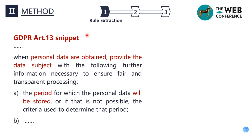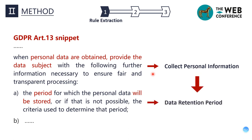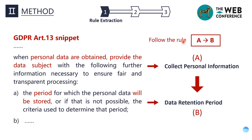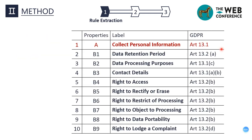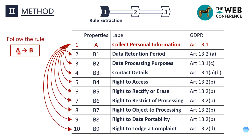The first step is rule extraction. Looking at a snippet of GDPR, we can see that it follows the rule: if personal information is collected, the data retention period should be given. We define A as collecting personal information and B as data retention period. Then it follows the rule A implies B. When determining compliance, a privacy policy is compliant if it follows the rule. The labels extracted from Article 13 of the GDPR all follow the rule of A implies B, and each label corresponds to one rule.